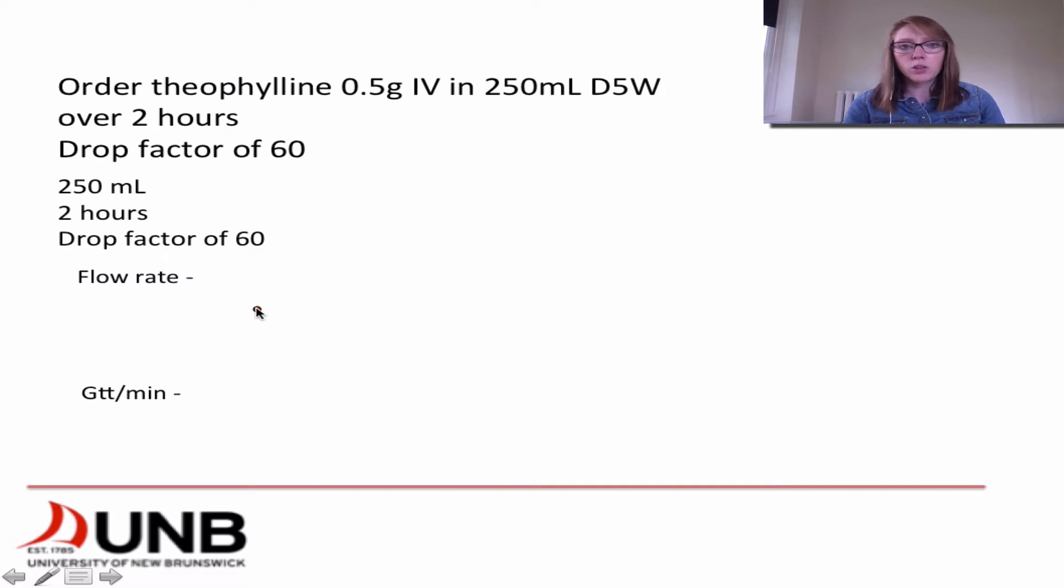So the first thing that we're going to do is we're going to calculate our flow rate. So we know that flow rate is in mLs per hour. So we're going to take our 250 mLs and we're going to divide it by two hours. And we know that we have a flow rate when we do this math of 125 mLs per hour.